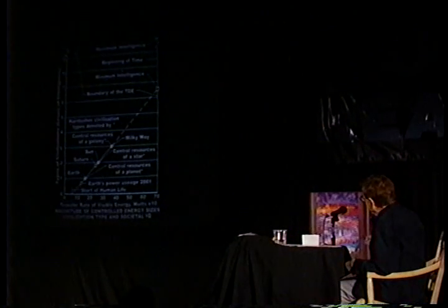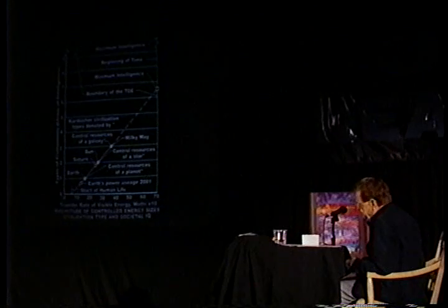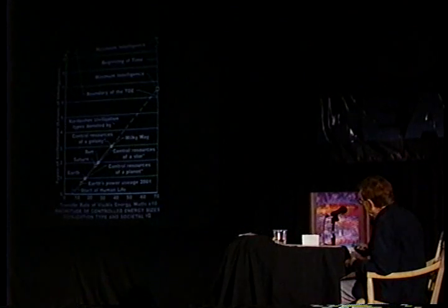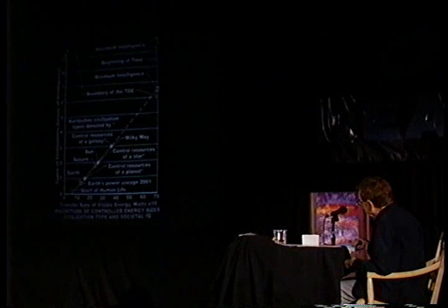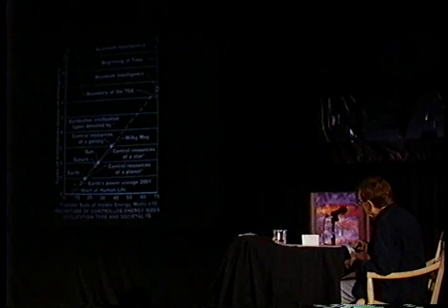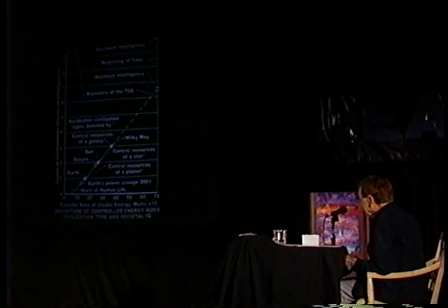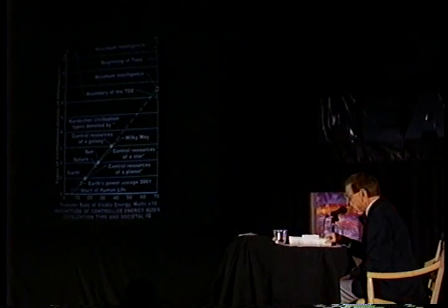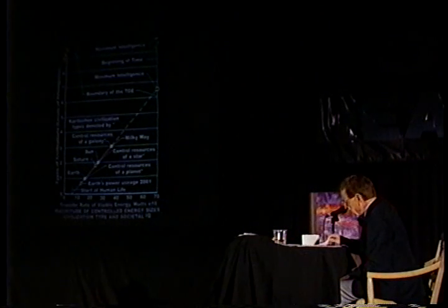Time goes from right to left, and over in here the time would be about something in the neighborhood of 15 billion years. You can see that it takes quite a bit of time for these things to happen. Just the vertical separation between Earth and where we are now in terms of producing energy represents quite a span of years, and it gives you some idea that we're not going to get very far very fast unless we really wanted to do it.